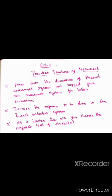Unit 9: write down the drawbacks of the present assessment system. What are the drawbacks and what are your suggestions? Second, discuss the reforms to be found in the present evaluation system. Third, as a teacher, how will you assess the conferential level of students?